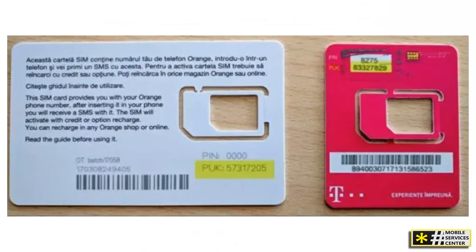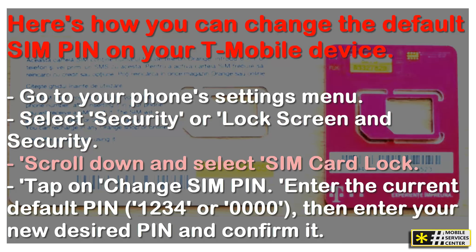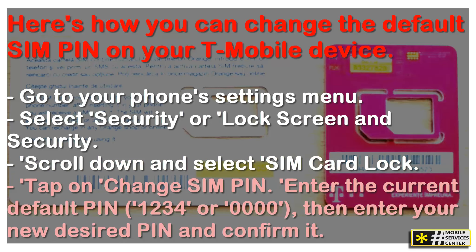Here's how you can change the default SIM PIN on your T-Mobile device. Go to your Phone Settings menu. Select Security or Lock Screen and Security. Scroll down and select SIM Card Lock. Tap on Change SIM PIN. Enter the current default PIN — 1234 or 0000 — then enter your new desired PIN and confirm it.